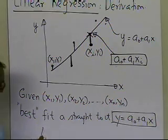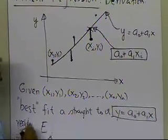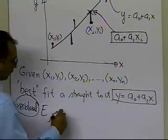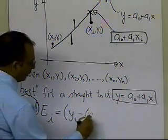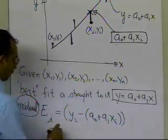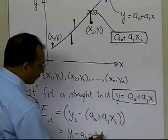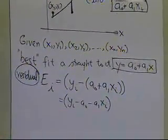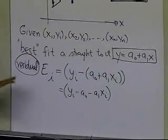If you look at the amount of residual — that's what it's called, some people call it error — there is a residual at each and every data point, which is the observed value yi minus a0 minus a1*xi. That is the amount of residual at each data point.